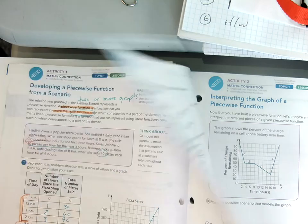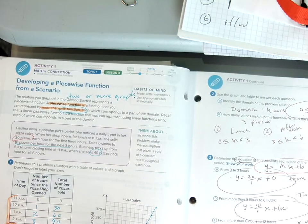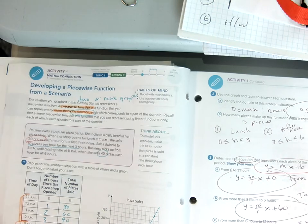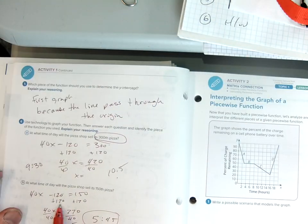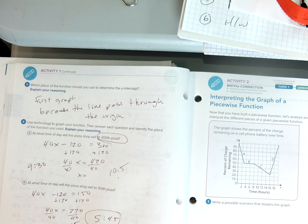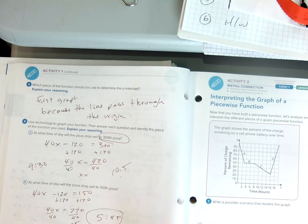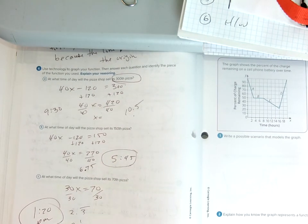And then the 150th pizza. Well, again, the 150th pizza would be graph 3. So I used graph 3. I used that equation. Solved for it. And I got 6.75. 0.75 is three-fourths of an hour, which is 45 minutes. And again, we're one hour later because we started at 11 o'clock. So I got 5.45.